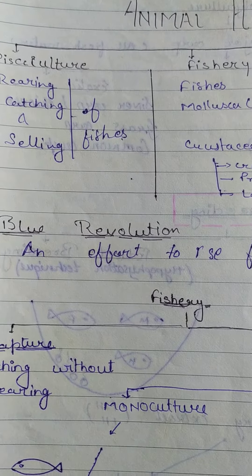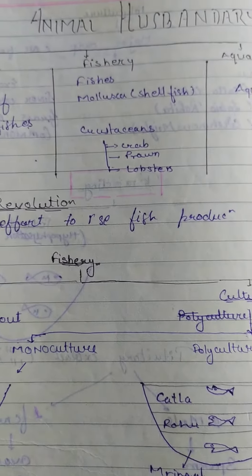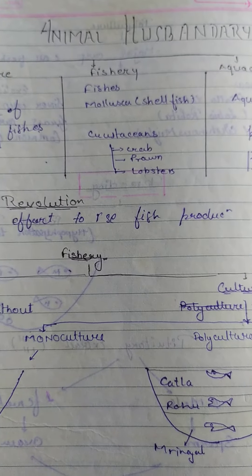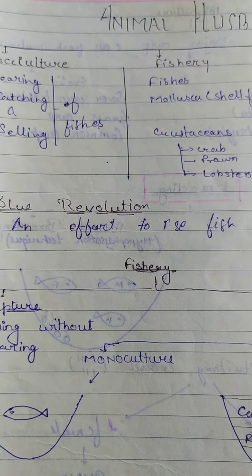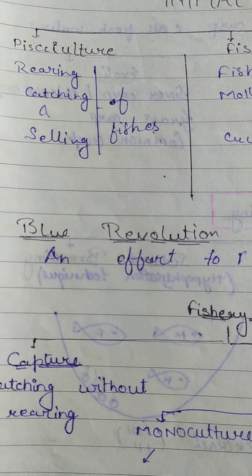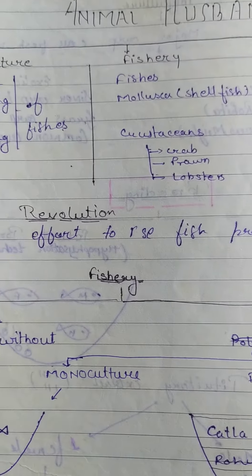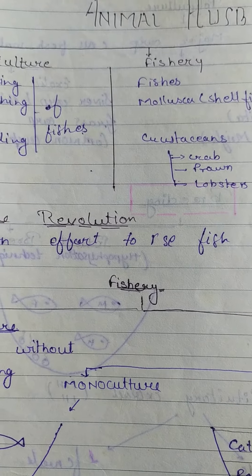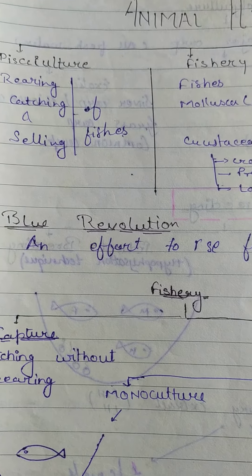So here you are seeing a very good handwritten flowchart, just like a note. Animal husbandry consists of the rearing up of livestock and cattle.